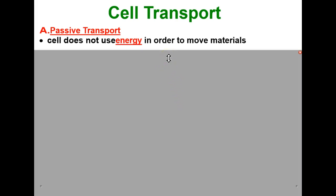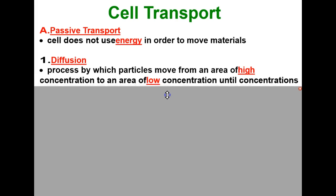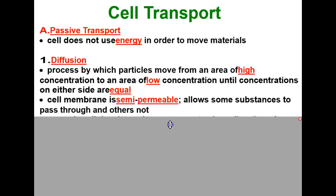Three types of passive transport include diffusion. Diffusion is the process by which particles move from an area of high concentration to an area of low concentration until the concentrations on either side are equal. This takes place in cells because cell membranes are semi-permeable, meaning they allow some substances to pass through and others not.